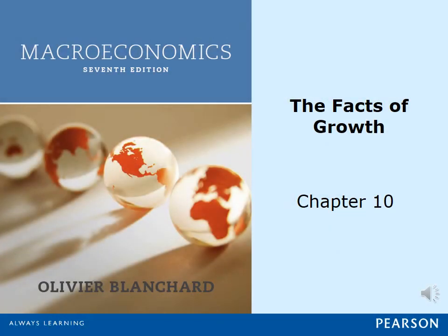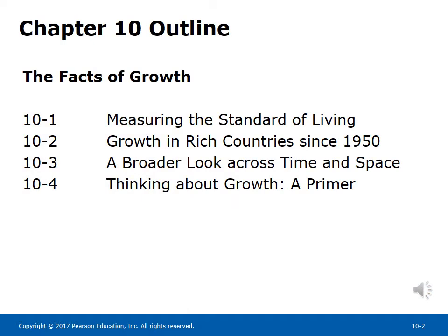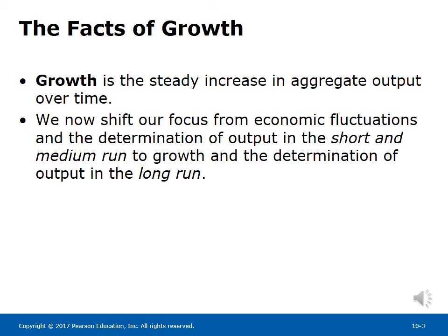Chapter 10: The Facts of Growth. Over long periods, fluctuations in output are dwarfed by growth, which is the steady increase of aggregate output over time. We now shift our focus from economic fluctuations and the determination of output in the short and medium run to growth and the determination of output in the long run — meaning over decades or over half a century or more.